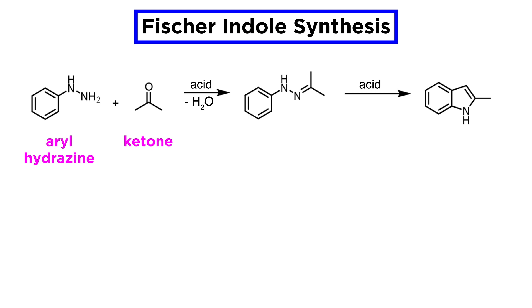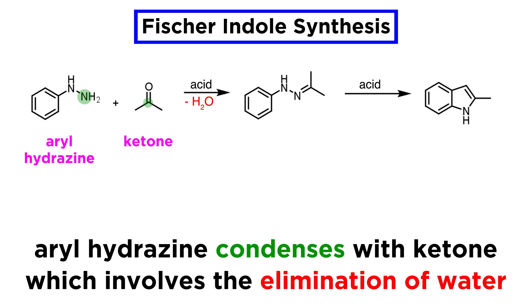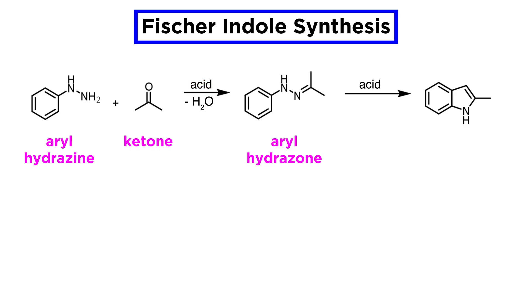It is well known that one can condense an arylhydrazine with a ketone, involving the elimination of water. This is usually done with acid catalysts, where the removal of water will drive the equilibrium forward. This yields aryl hydrazones like this one, which are often crystalline compounds.